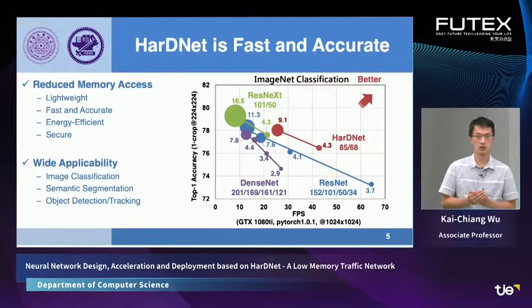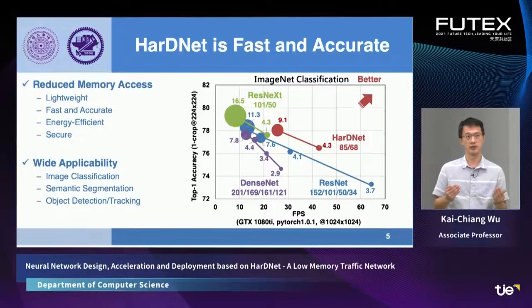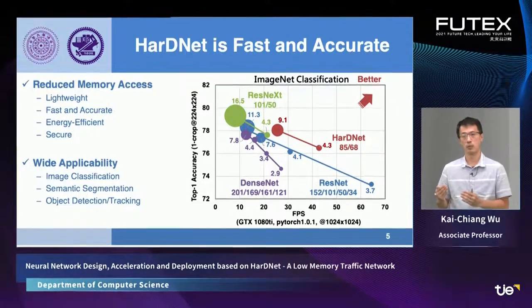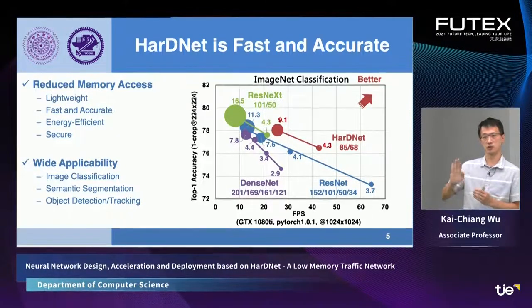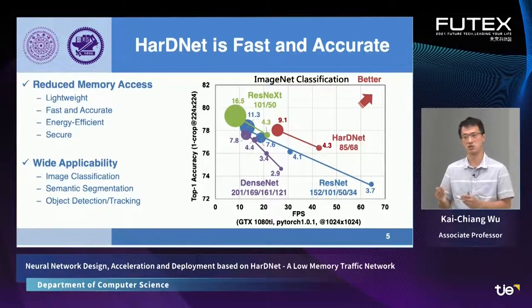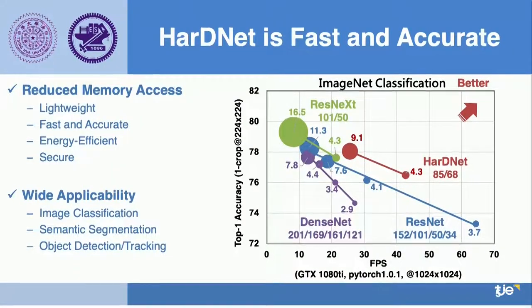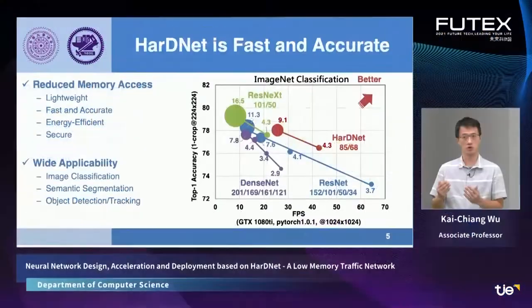Because of the properties introduced in the previous slide, the principle and final goal for designing HardNet is to reduce memory access and the overall memory profile. Because of that, we can have a lightweight architecture. Our neural net can be fast, accurate, energy efficient, and also surprisingly secure. In the figure on the right, I will show how fast and accurate our proposed HardNet is. In this slide, the more upper-right, the better — right means faster and upper means more accurate. You can see our HardNet has two different points very close to the upper-right corner, which means our HardNet is not only fast but also accurate compared to DenseNet, ResNet, and ResNeXt.